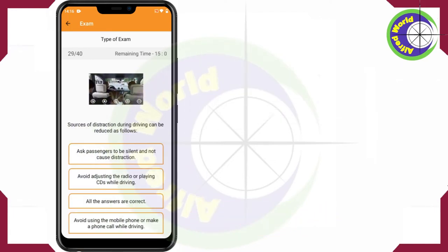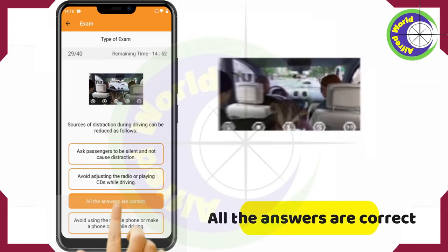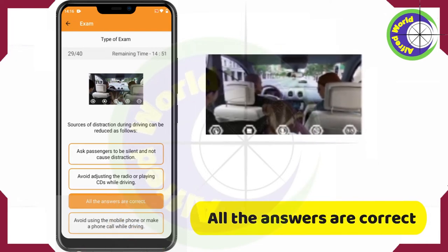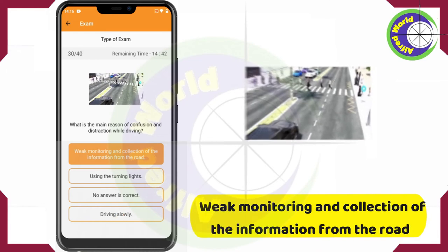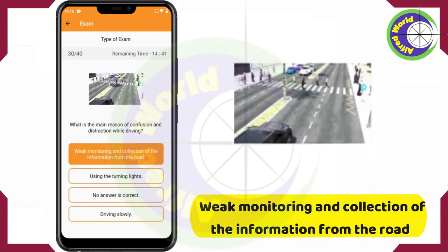Sources of distraction during driving can be reduced as follows — all the answers are correct. What is the main reason of confusion and distraction while driving? Weak monitoring and collection of the information from the road.